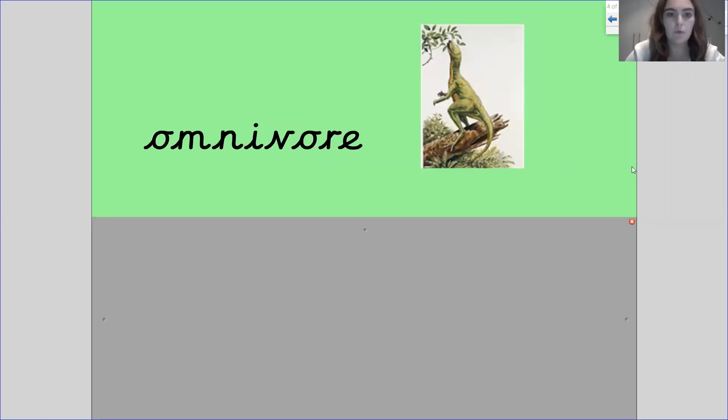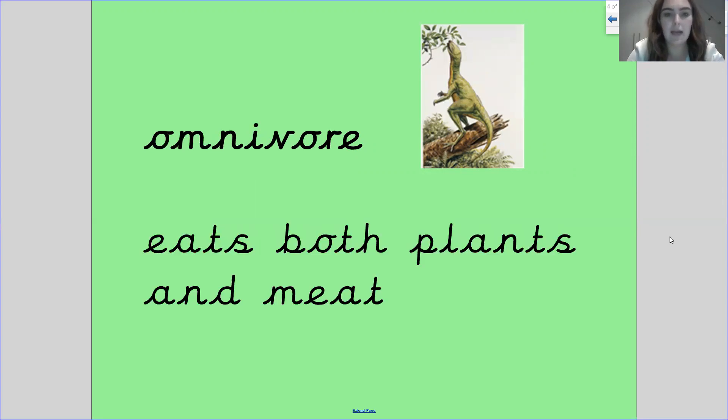The next word is omnivore. My turn, your turn. Omnivore. Omnivore. An omnivore eats both plants and meat.